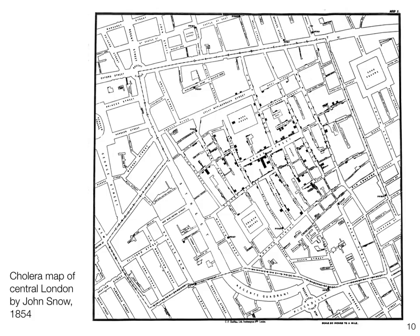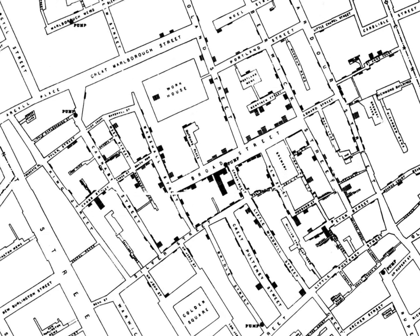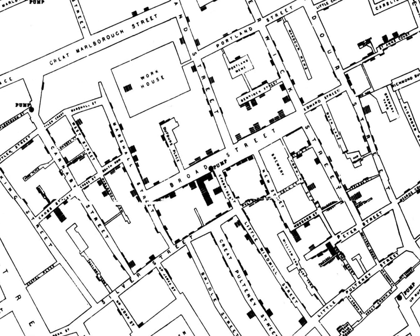More current than ever, here we have the famous cholera map of central London by John Snow, which helped identify the source of the outbreak — though it is somewhat disputed whether the map itself identified the source or just helped convey that knowledge. Nevertheless, we see bar charts representing the cholera cases and how they're clustered around a very specific pump.